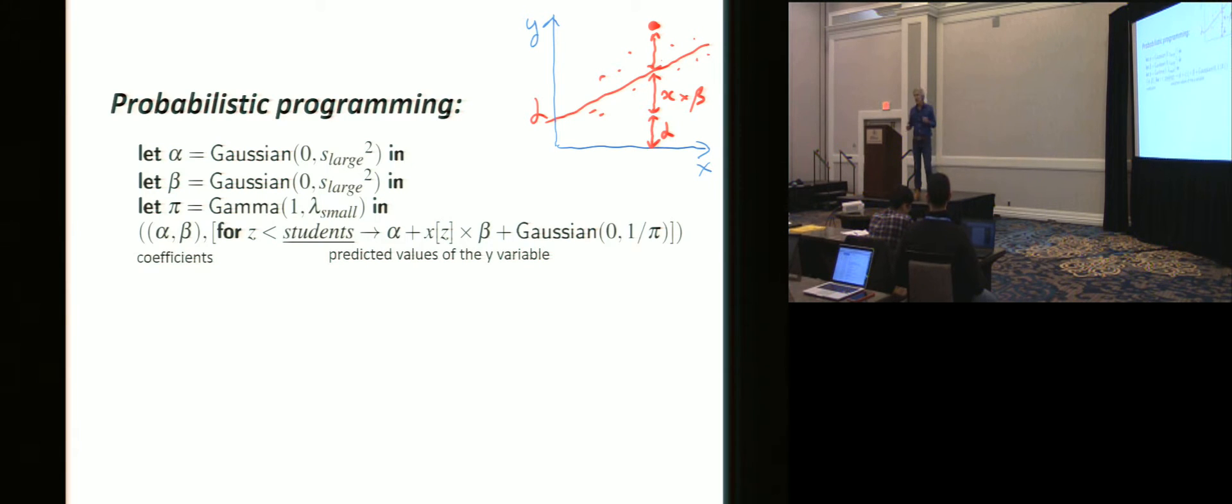Now, probabilistic programming is a general field that's got quite popular in the last few years, which is all about defining machine learning models, such as regressions, as simple bits of code that if you run them forward would generate the data set. Then the task of a probabilistic programming system is to do that backwards: take the data and the model and find the coefficients to make predictions.